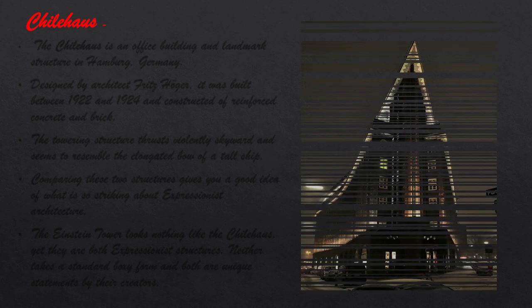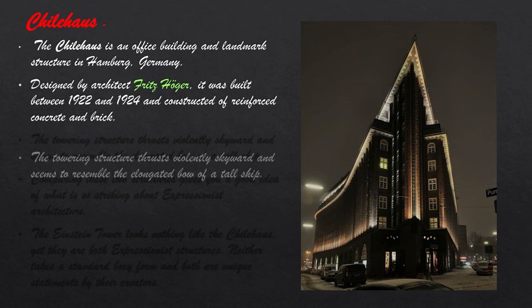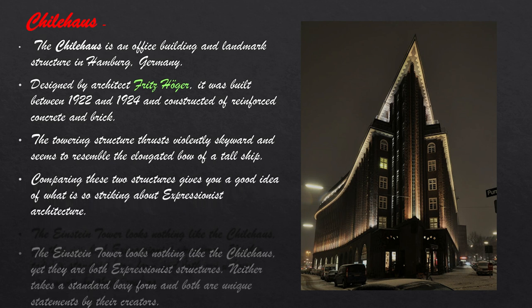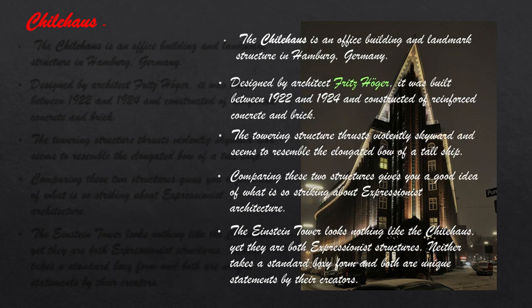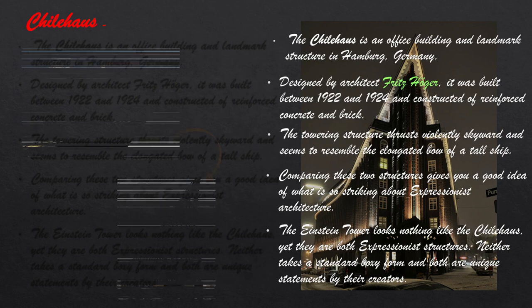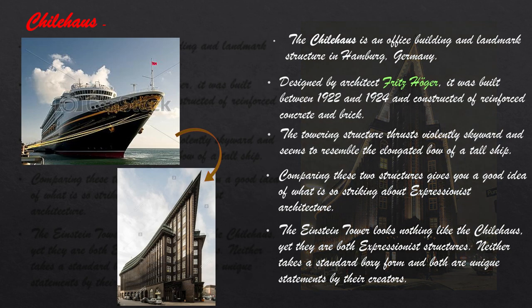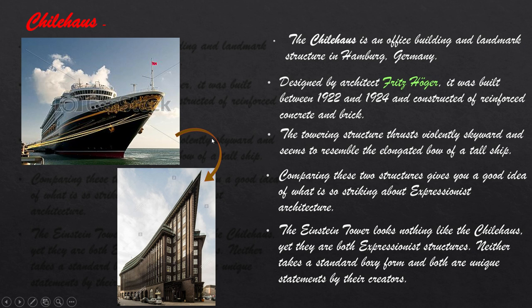The Chilehaus is an office building and landmark structure in Hamburg, Germany. Designed by architect Fritz Höger, it was built between 1922 and 1924 and constructed of reinforced concrete and brick. The towering structure thrusts violently skyward and seems to resemble the elongated bow of a tall ship. Comparing these two structures gives a good idea of what is striking about Expressionist architecture — the Einstein Tower looks nothing like the Chilehaus, yet they are both Expressionist structures. Neither takes a standard boxy form and both are unique statements by their creators.